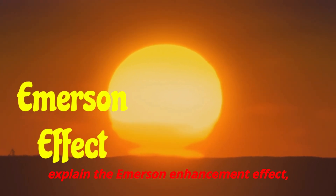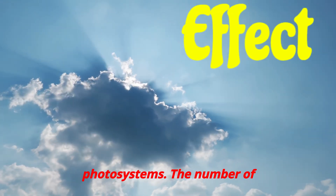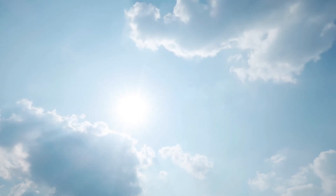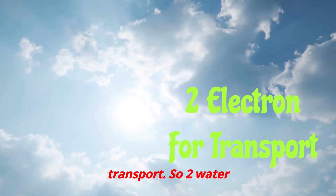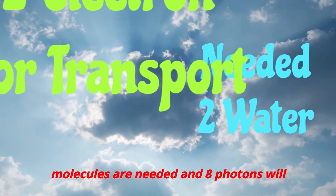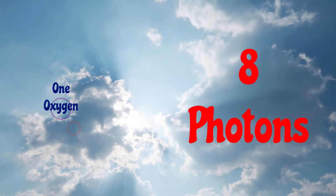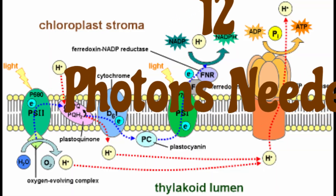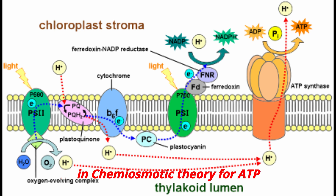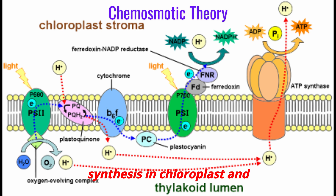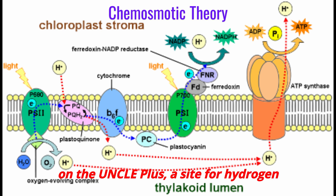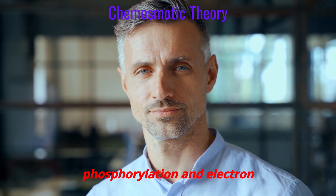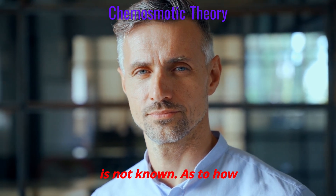This helps explain the Emerson enhancement effect, which indicates the use of two photosystems. The number of photons of light is important for photosynthesis efficiency. Two electrons are needed per transport, so two water molecules are needed and eight photons are required to give one oxygen molecule. Thus eight electrons are needed per CO₂ fixed; ideally only 12 photons are needed. This theory was put forward by Mitchell in the chemiosmotic theory for ATP synthesis in chloroplasts and mitochondria, occurring at the coupling factor site for hydrogen ion transfer and ATP synthesis.